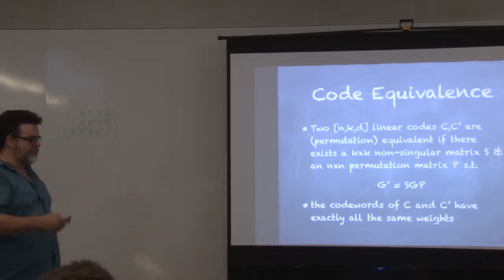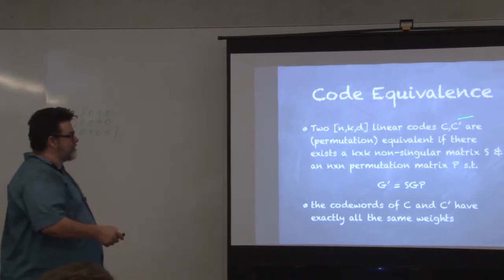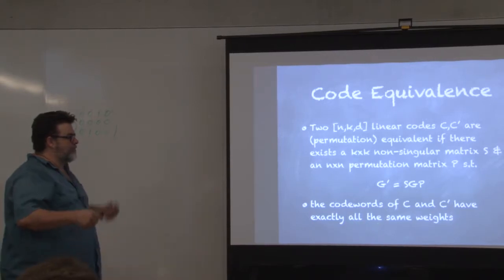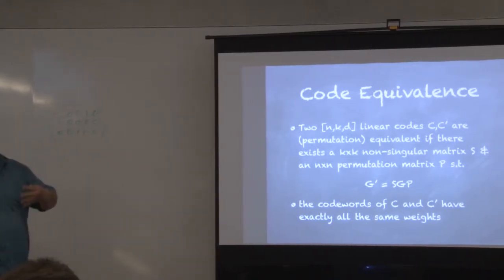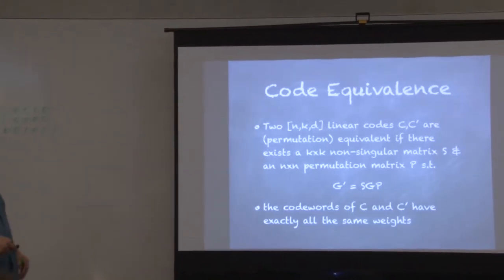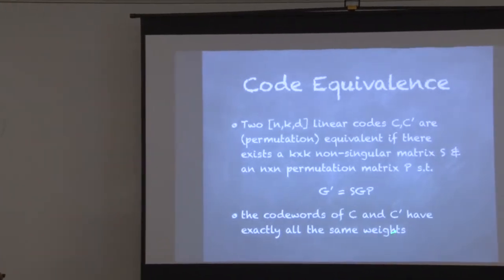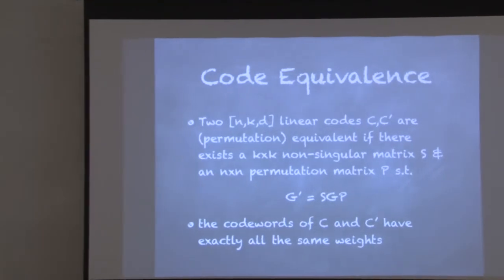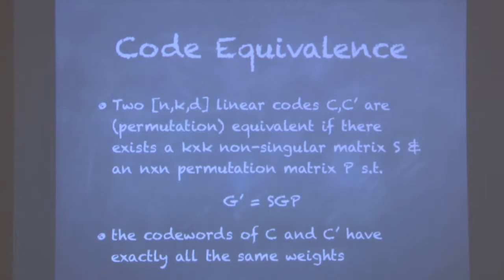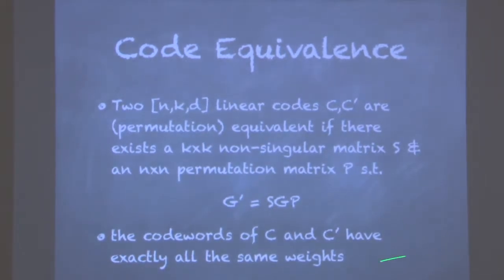What is remarkable about equivalent codes is that the codewords of C and C prime are typically different and look very different. But all the weights of the words are preserved. If I start with a word of weight seven and move the columns around, I still have a word of weight seven. So the weights are preserved, but the codes look different.